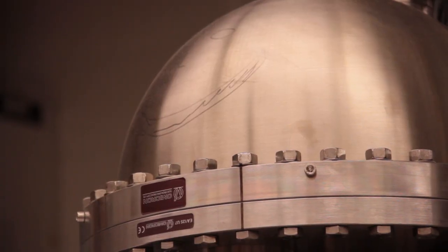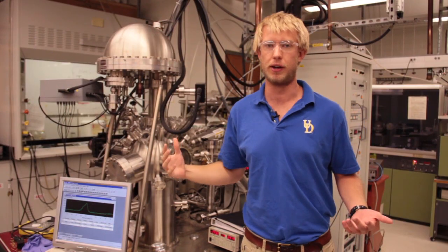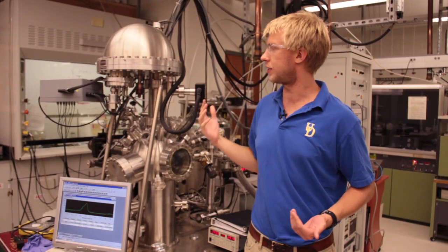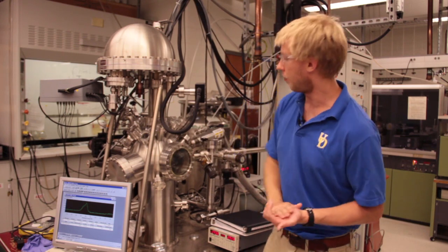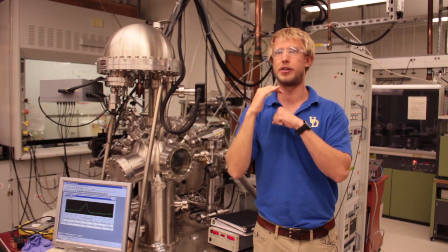The electrons get curved around here by an electric field. Based on how much they curve we can tell how fast they're going, and how fast they're going tells us their energy. Their energy tells us how strongly they were bonded to that center nucleus.